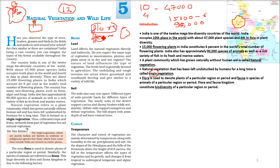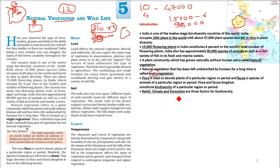From fauna, F-A-U-N-A, you can remember 'animal' — all the animals of a region is the fauna. These different types of flora and fauna of a region constitute the biodiversity. So different types of plants and different types of animals together constitute biodiversity.